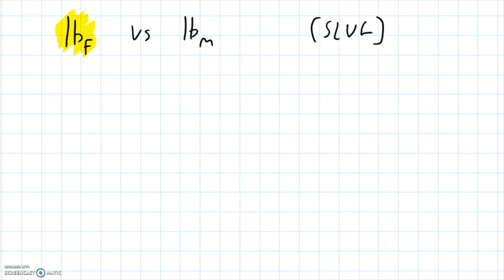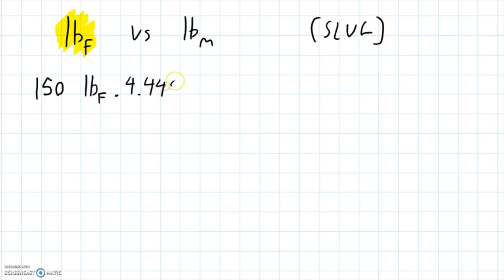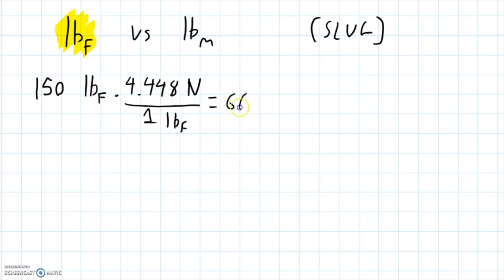So what does that mean? If I tell you that my weight is 150 pounds force — just to be extra clear — you could convert that to the metric system. A lot of students are more comfortable with the metric system, so you could look up the conversion that there are 4.448 Newtons in one pound force. So my weight in the metric system is 667 Newtons.